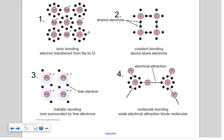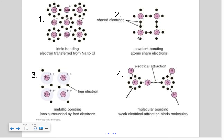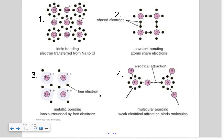To summarize the four types: ionic bonding holds the crystal structure together through opposite charges; covalent network crystals use covalent bonding where electrons are shared; metallic bonding features a sea of free electrons floating from one atom to the next; and covalent molecular crystals involve intermolecular forces like hydrogen bonds, dipole-dipole, and London dispersion — individually rather than as a network.